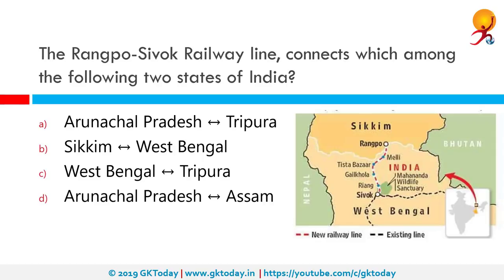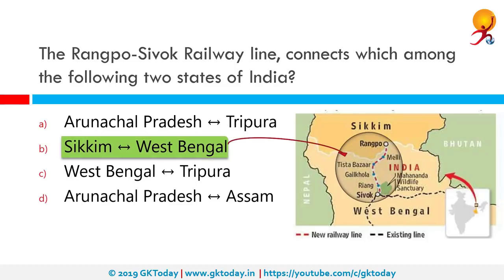The Rangpo-Sivok Railway line connects which among the following two states of India? It connects Sikkim and West Bengal. It is a 45-kilometer long line and will have 14 tunnels and 28 bridges.